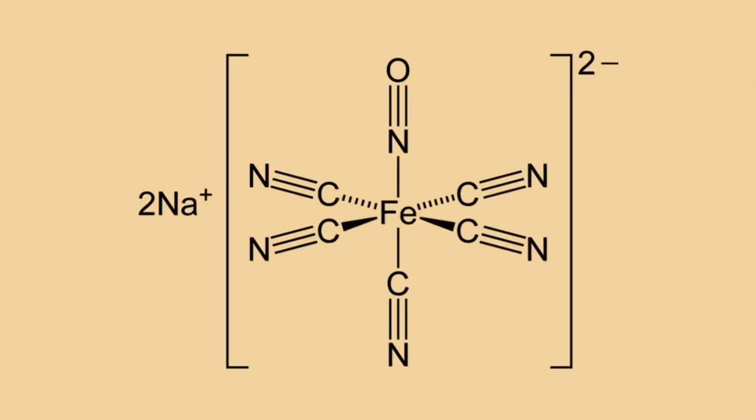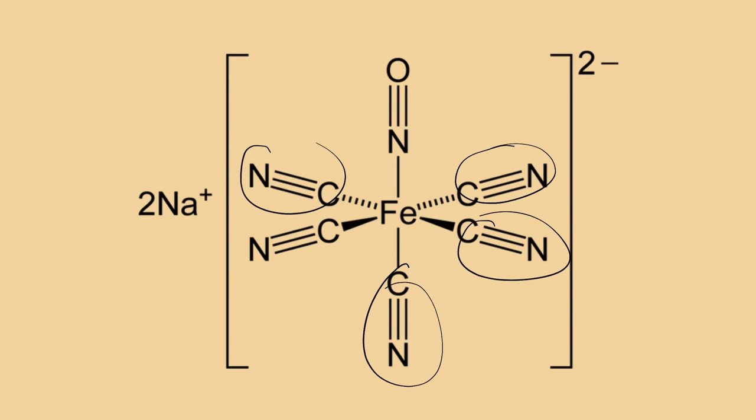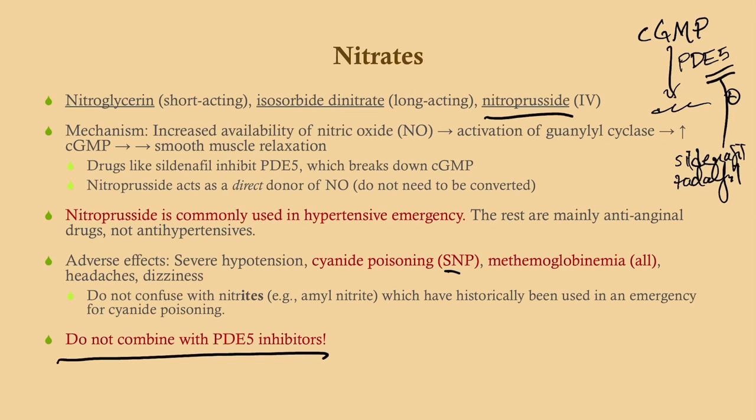Why does cyanide poisoning occur with nitroprusside? The sodium nitroprusside molecule contains multiple cyanide groups, so when it gets metabolized, cyanide is released. Ordinarily, the amount of nitroprusside we give is fine, but if you give a large amount, you can precipitate cyanide poisoning. So be careful.